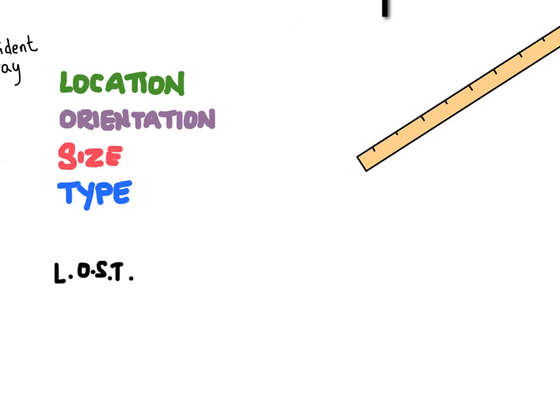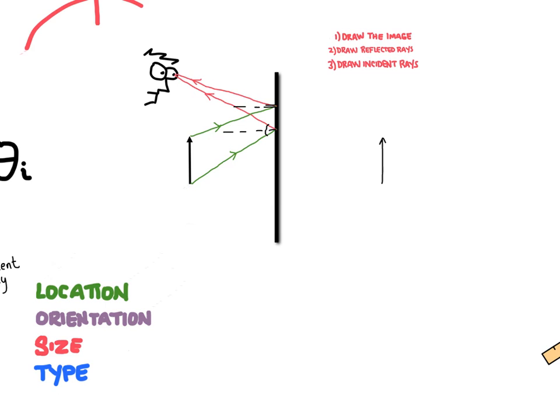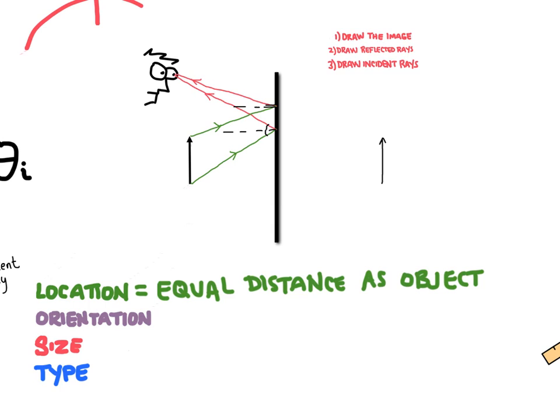Starting with location: normally we could calculate how far the image is from the mirror using the mirror equation, but we'll save that for a later video. In this case, we'll just say the image is equal distance from the mirror as the object. Next is orientation — it's either upright or inverted. Upright means going the same way as the object; inverted means flipped upside down. In this case, it's upright. Size: for plain flat mirrors, it's going to be the same size as the object.